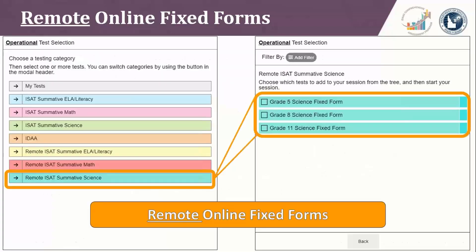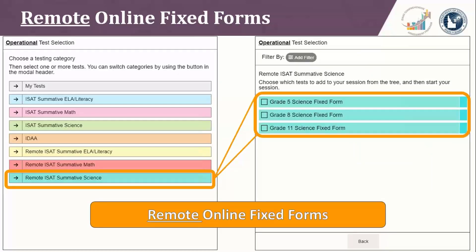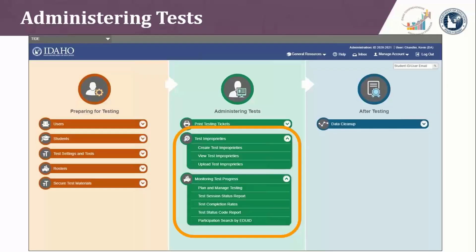The remote online fixed forms are on their own branch of the TA test tree — on the remote ISAT summative science branch. From there, a TA can pick the grade 5, 8, and/or 11 science fixed forms to include in the test session. Just like the in-person test, students have to use the Idaho Secure Browser to access the remote ISAT summative science test.